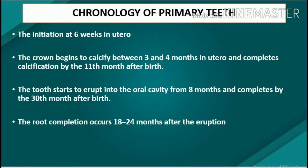Chronology of primary teeth: the initiation of primary teeth formation occurs approximately at six weeks in utero. The crown begins to calcify between three and four months in utero and completes calcification by the 11th month after birth. The tooth starts to erupt into the oral cavity from eight months and completes by the 30th month after birth. Root completion occurs 18–24 months after eruption.